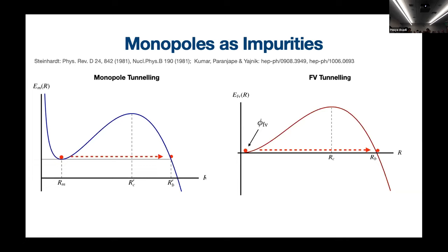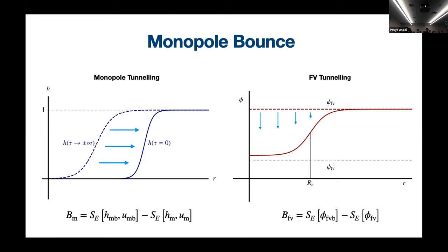The reason the general case is difficult is that in the false vacuum case we had O4 symmetry where the bounce depends only on rho, whereas in the monopole case this symmetry is broken. The monopole tunneling starts with a monopole profile as a function of r, and at Euclidean time equal to zero this has to match to a bubble of critical size. This boundary condition at large Euclidean time is r-dependent and doesn't depend on rho, so it breaks the O4 symmetry. You can no longer make the simplifying assumption; you need to solve the full PDE as a function of r and tau.